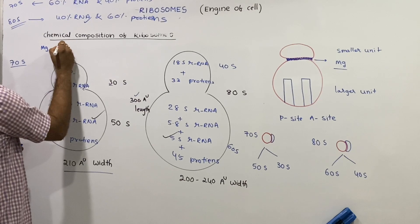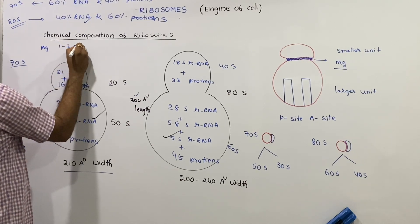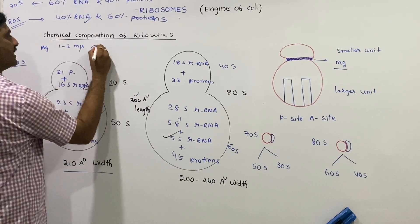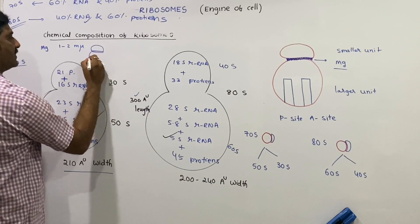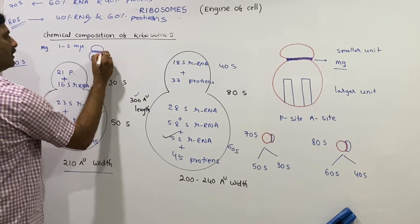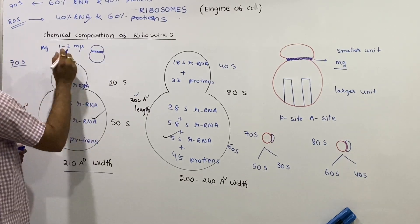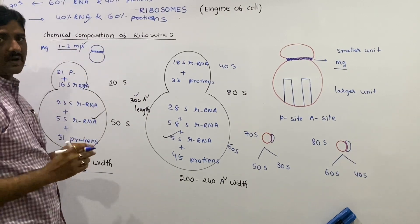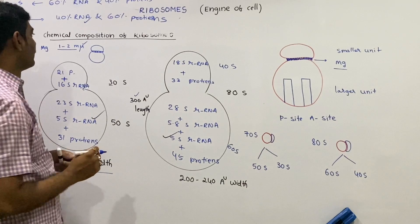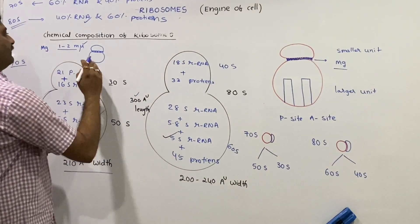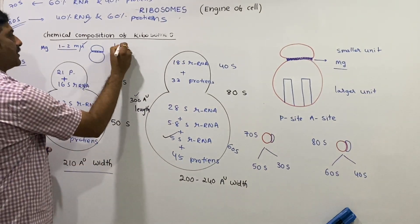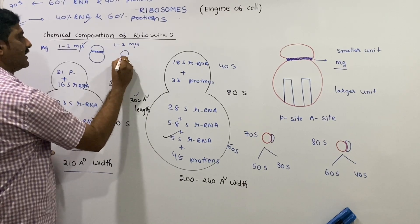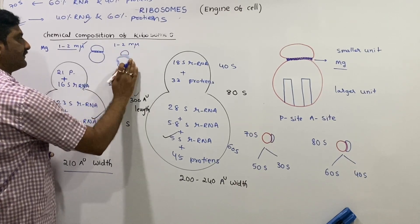At magnesium ion concentrations of 1 to 2 millimicrons, the two ribosome subunits are assembled together. Below this concentration, the two subunits are disassociated.